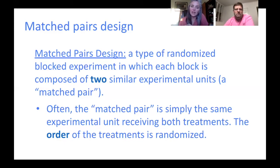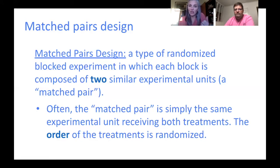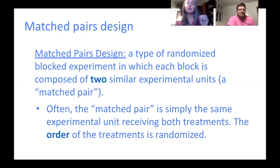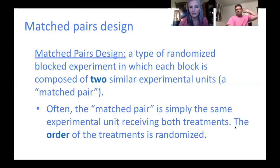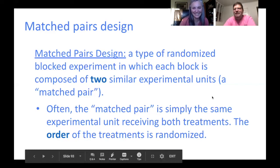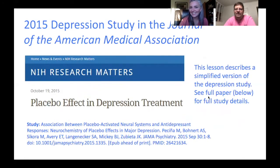An important point: if the subject is receiving both treatments, the order has to be randomized. If I'm doing an experiment on dominant versus non-dominant hand, I'd flip a coin — heads means I throw with my dominant hand first. Every person in the experiment does something similar individually, so it's not one coin flip deciding everyone's order. You don't want it to be that they were just tired and that's why they didn't throw as far with their dominant hand.